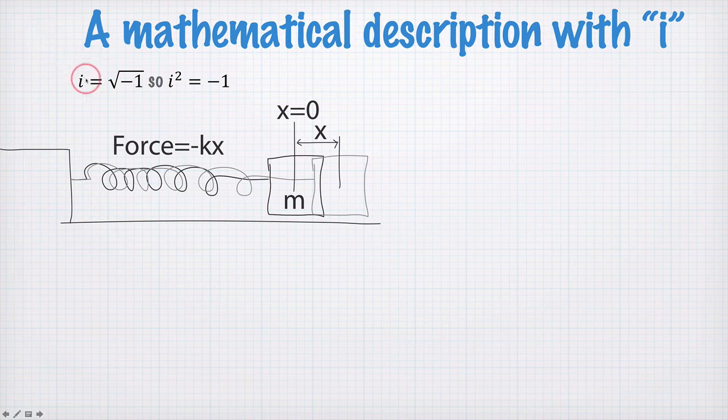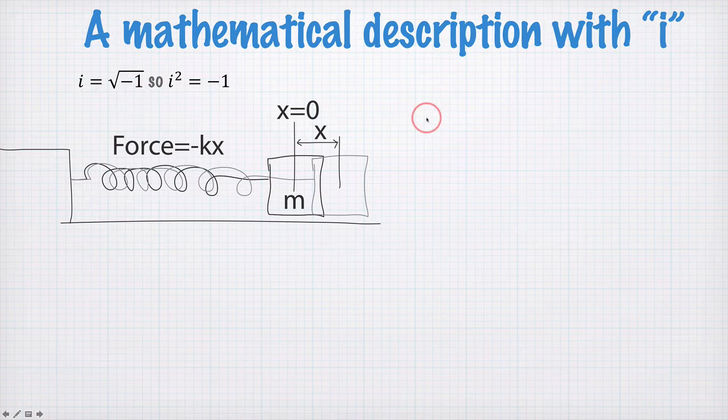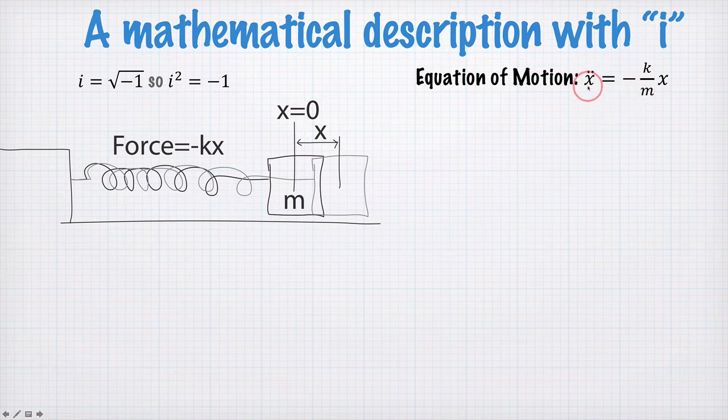So let's now use our square root of minus 1, our i, to write down a solution to our differential equation in a slightly different form. Here's our equation of motion again, relating the second derivative of x to x.